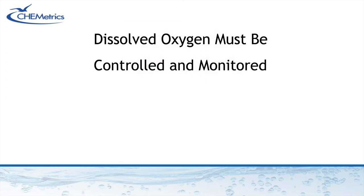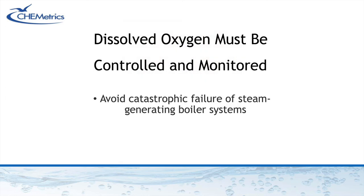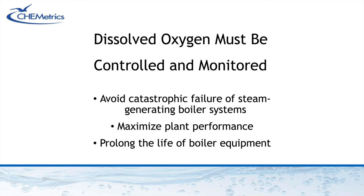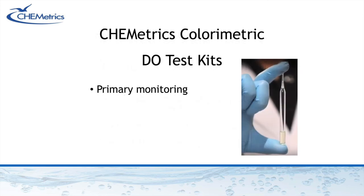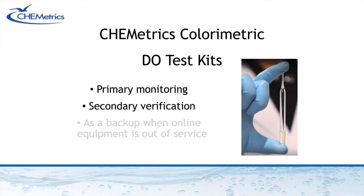In conclusion, dissolved oxygen must be controlled and monitored not only to avoid catastrophic failure of steam generating boiler systems, but also to maximize plant performance and prolong the life of boiler equipment. Chemetrix kits are used as a primary means to measure DO in boiler systems, as a secondary means to verify online equipment readings, and as a backup when online equipment simply isn't working.